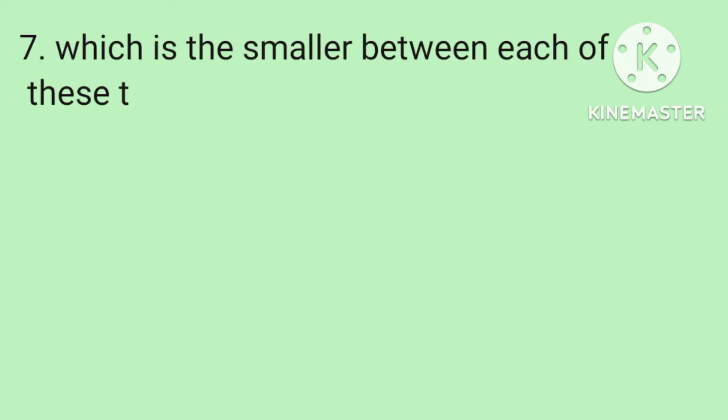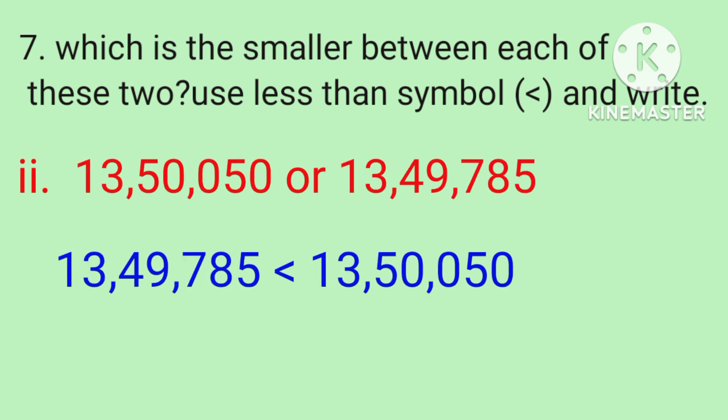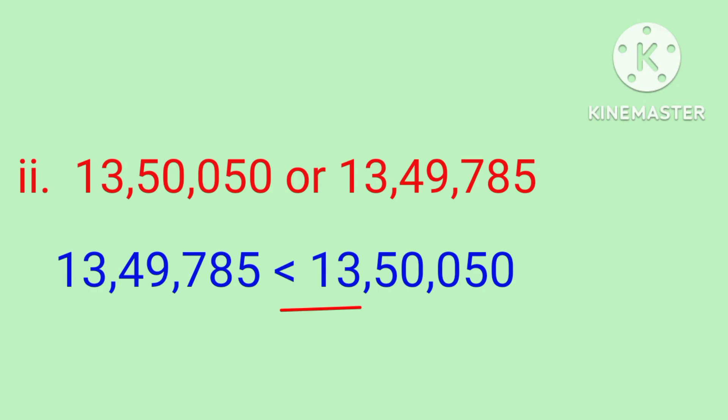Which is smaller between each of these two? Use the less than symbol and write. First one: 2 lakhs 15, or 99,999. Answer: 99,999 is less than 2 lakhs 15. Use only the less than symbol as asked. Second one: 13 lakhs 50,050, or 13 lakhs 49,785. Choose the smaller number, write it first, use the less than symbol, and write the bigger number.